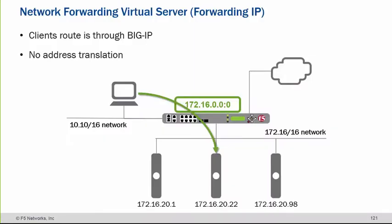Let's take an example of forwarding IP virtual servers rather than standard virtual servers. The client is on the 10.0 subnet and the server is on the 172 subnet. The scenario or task is: I want the 10.16 network to reach the 172.16 network, but I do not want to translate anything.